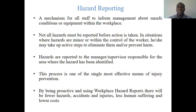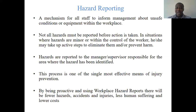From hazard identification, we proceed to reporting the hazards. Reporting is a mechanism for all staff to inform management about unsafe conditions or equipment within the workplace. Not all hazards must be reported before action is taken — some minor hazards should be dealt with by employees when the hazard is very acute. In situations where hazards are minor or within the control of a worker, he or she may take active steps to eliminate them. Hazards are reported to managers and supervisors responsible for the area where the hazard has been identified. This process is one of the single most effective means of injury and accident prevention.